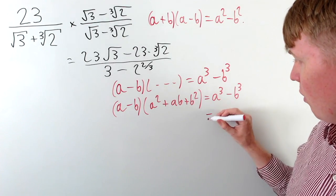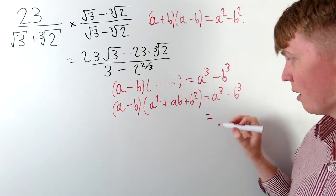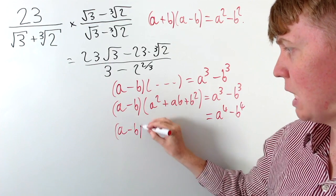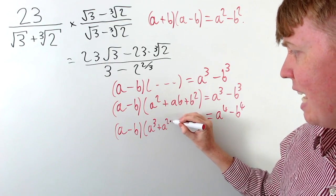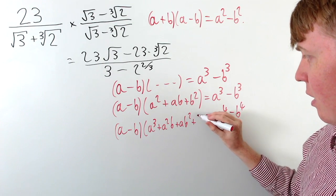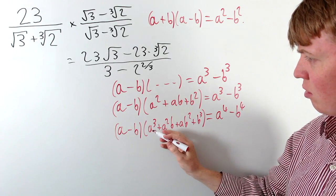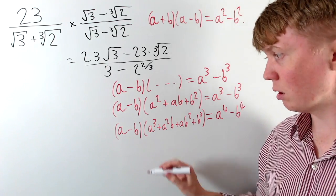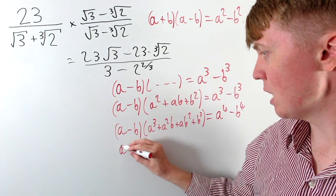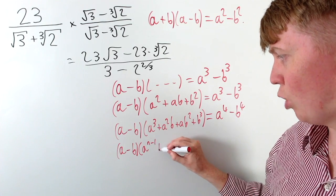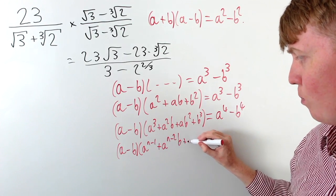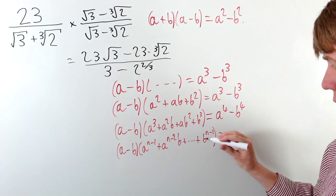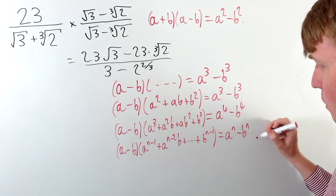If we had a fourth root in the denominator, you can show that a to the 4 minus b to the 4 is always equivalent to a minus b multiplied by a cubed plus a squared b plus ab squared plus b cubed. There's a general result: a minus b multiplied by a to the n minus 1 plus a to the n minus 2 times b, and so on, all the way up to b to the power of n minus 1, is always equivalent to a to the n minus b to the n. This could help you deal with any nth root in your denominator.